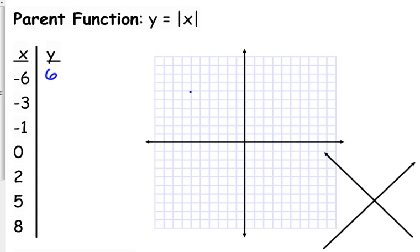Negative 6, positive 6. The absolute value of negative 3 is positive 3. The absolute value of negative 1 is positive 1. The absolute value of 0 is still 0. The absolute value of 2 is 2. The absolute value of 5 is 5, and 8 is 8.